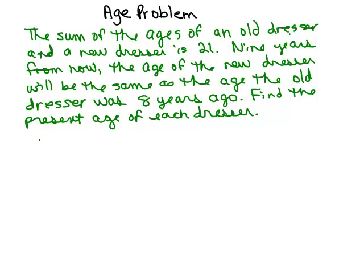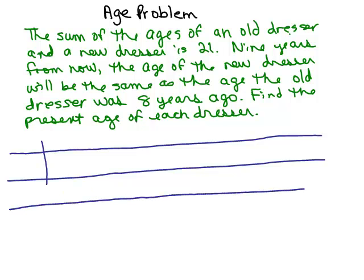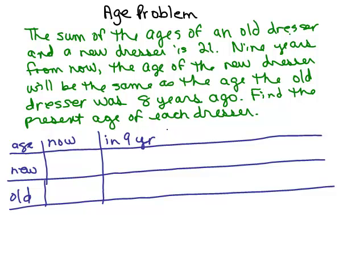Let's do a little chart to try to keep this information organized. We've got the age of the new and the old dresser. We have their current age — right now how old they are — and one of the other time frames is nine years from now. The other time frame is eight years ago. We may not have to fill in all of these columns.